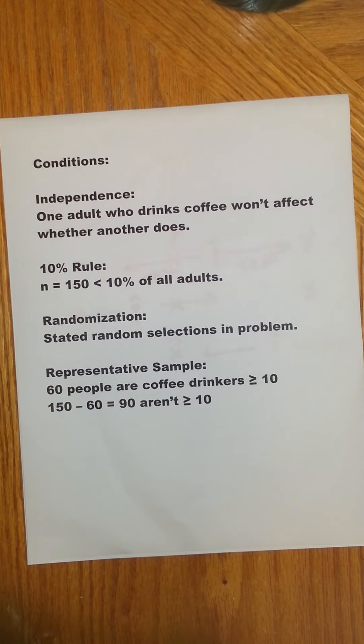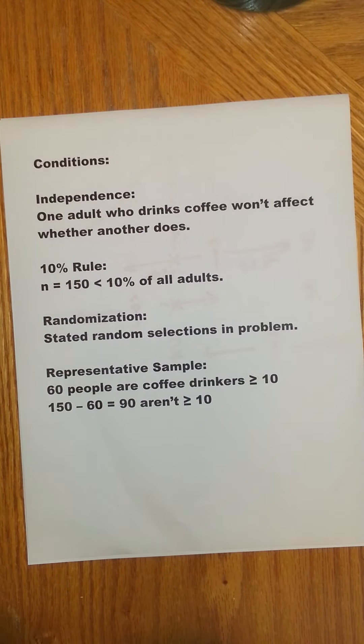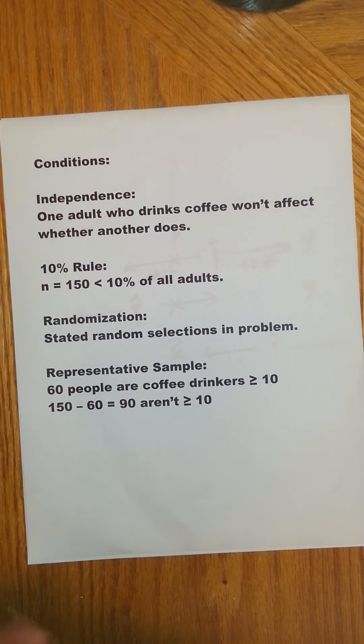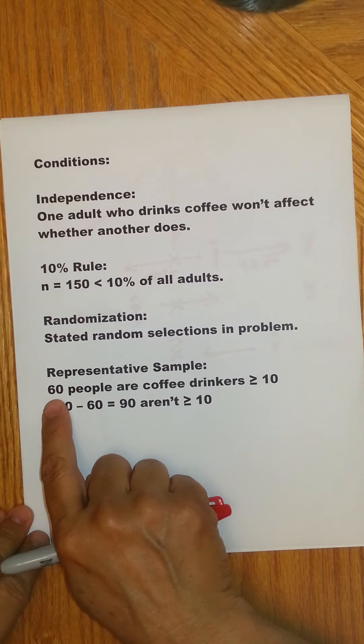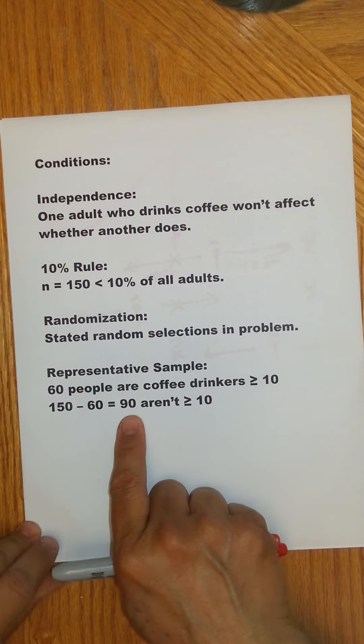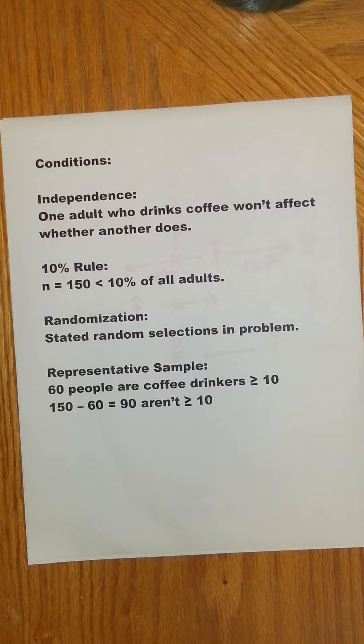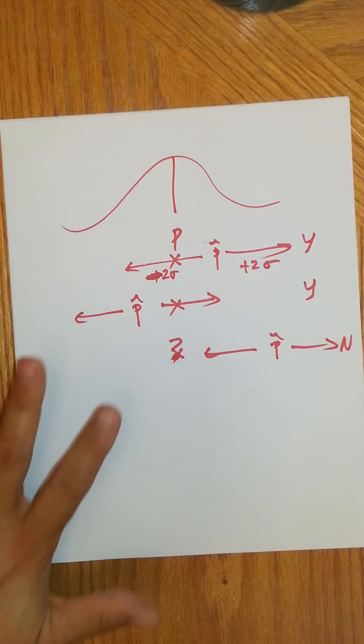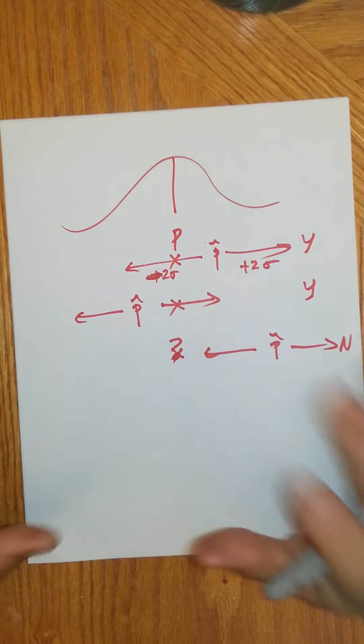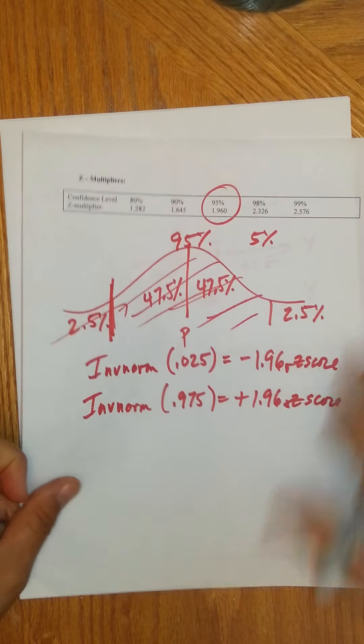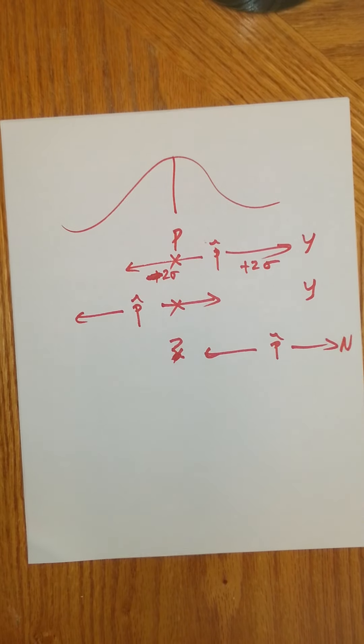So in our case, let's just check to make sure this happens. Here, independence, one adult who drinks coffee won't affect another. The 10% rule, obviously 150 is less than 10% of all adults. The problem said that the selection of the adults was random. And here in our sample, we found that 60 people in our sample drank coffee, that's more than 10, and then the rest 90 aren't, they didn't drink coffee. They're not coffee drinkers, so that's more than 10. We've met conditions, so we can say this is how samples would behave. And therefore, if I go out these standardized distances that we figure out through our z multiplier, then we'll capture the truth with a certain degree of confidence.